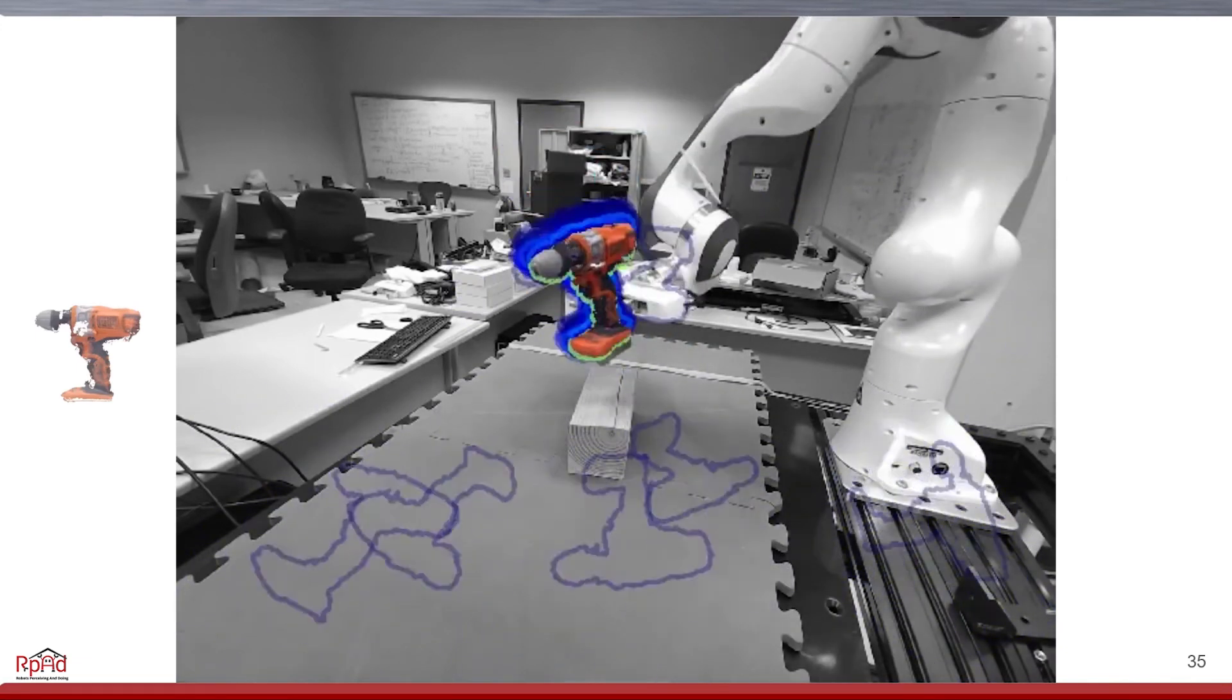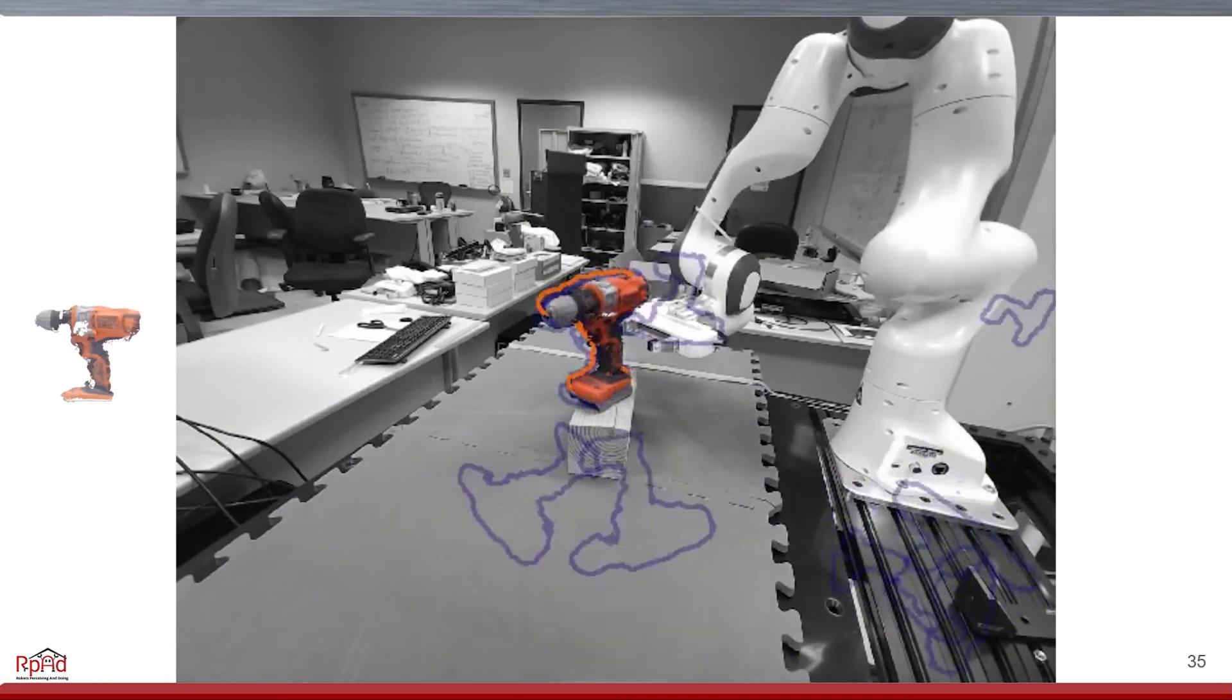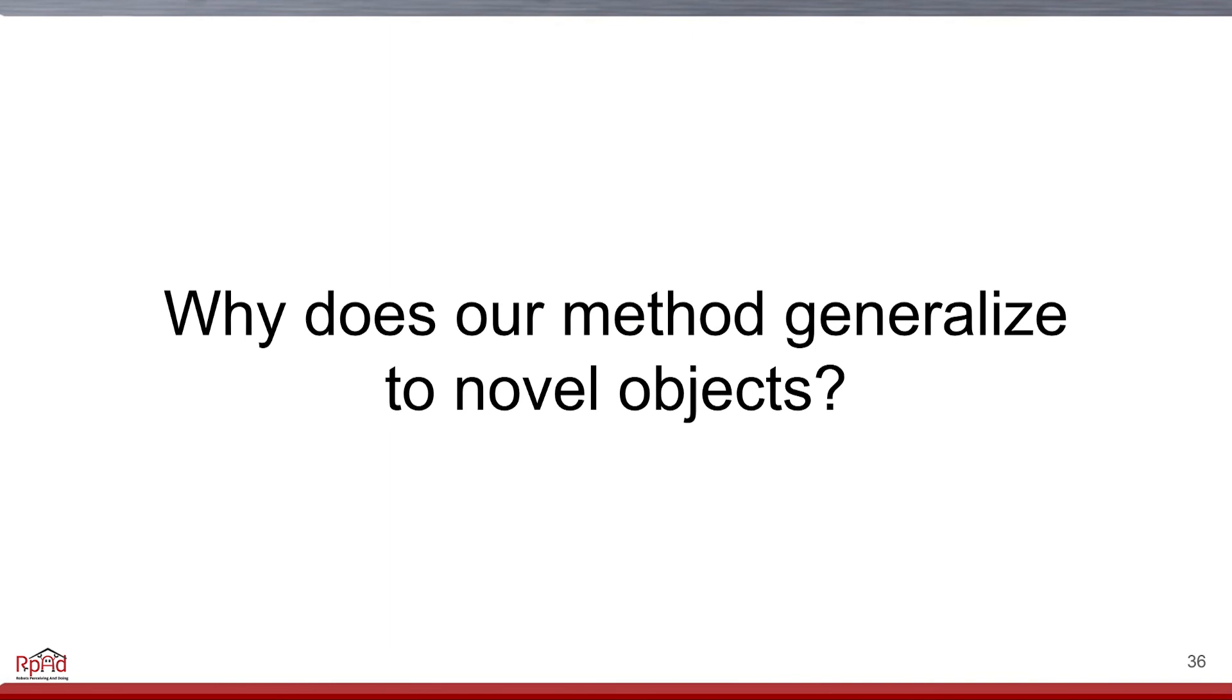Even though the tracking does lose the drill for a second, it still highly scores the correct pose. So we've shown that our method accurately generalizes to unseen objects. But why does the method do this?